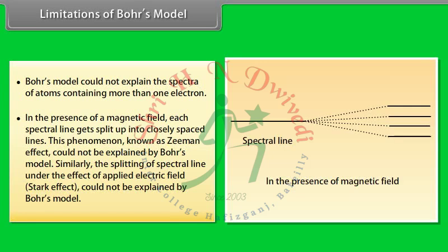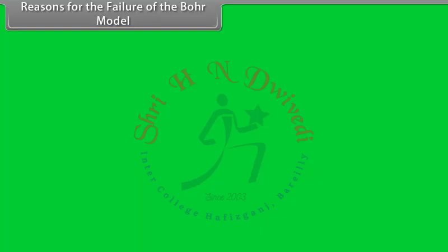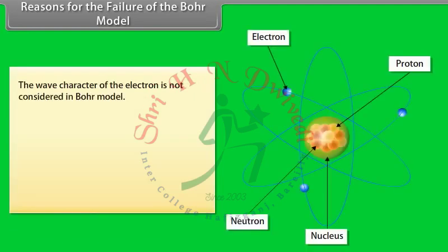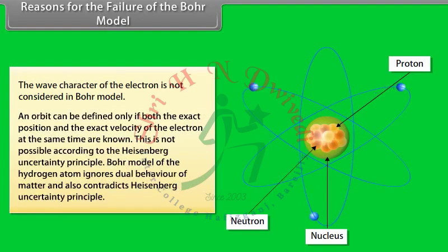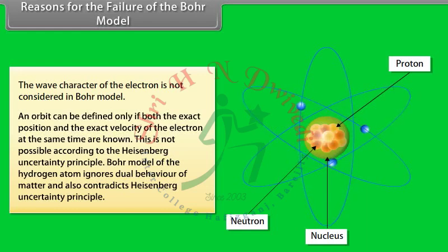Similarly, the splitting of spectral lines under the effect of an applied electric field — the Stark effect — could not be explained by Bohr's model. 3. The wave character of the electron is not considered in Bohr's model. An orbit can be defined only if both the exact position and exact velocity of the electron at the same time are known, which is not possible according to the Heisenberg uncertainty principle. Bohr's model ignores the dual behavior of matter and contradicts the Heisenberg uncertainty principle.